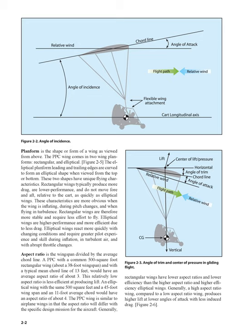Planform is the shape or form of a wing as viewed from above. The PPC wing comes in two wing planforms: rectangular and elliptical. The elliptical planform's leading and trailing edges are curved to form an elliptical shape when viewed from the top or bottom. These two shapes have unique flying characteristics. Rectangular wings typically produce more drag, are lower performance, and do not move fore and aft relative to the cart as quickly as elliptical wings. These characteristics are more obvious when the wing is inflating, during pitch changes, and when flying in turbulence. Rectangular wings are therefore more stable and require less effort to fly.